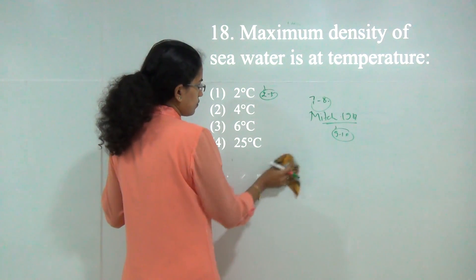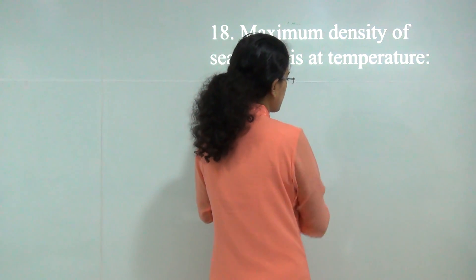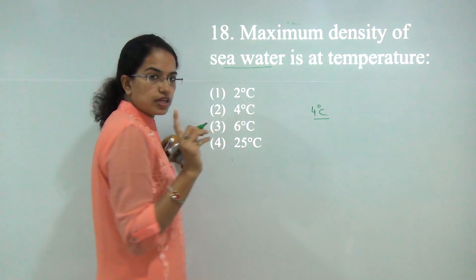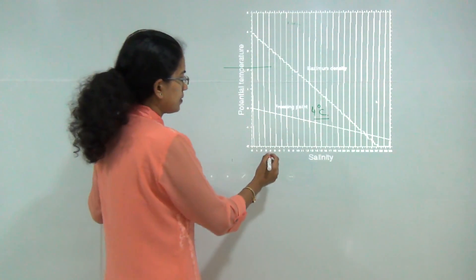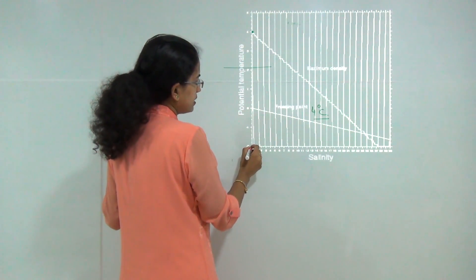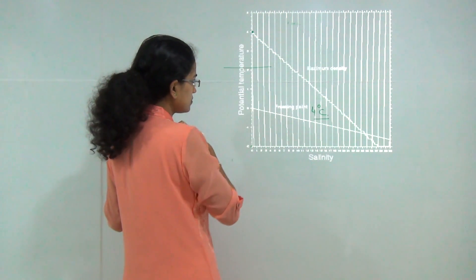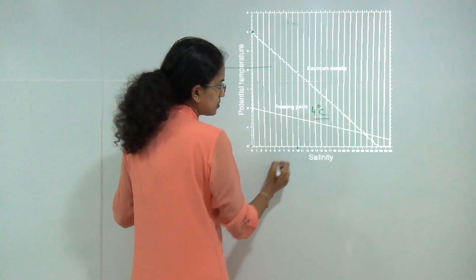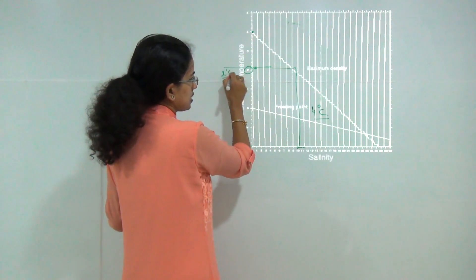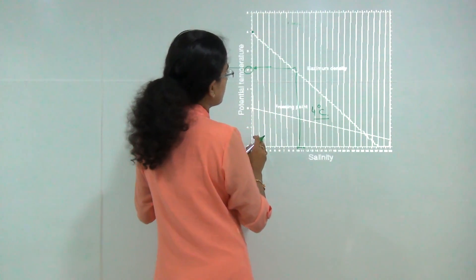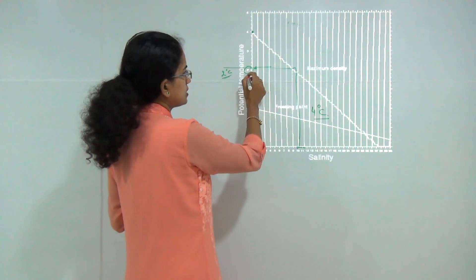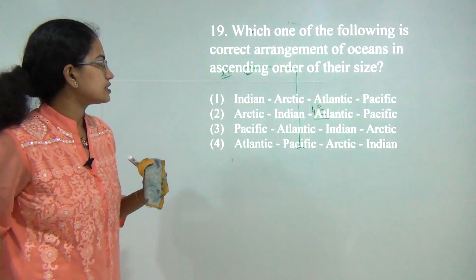Next: maximum density of sea water. The maximum density of fresh water is at 4 degrees Celsius, but the question asks about sea water. Looking at the salinity-temperature diagram: at 4 degrees with nil salinity that is the maximum density. For ocean water with salinity around 10 to 12, the temperature is at about 2 degrees Celsius. At maximum salinity, the temperature falls below 0 degrees Celsius. So the answer here would be 2 degrees Celsius.